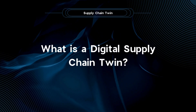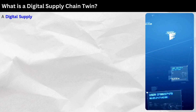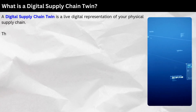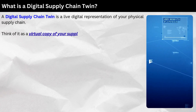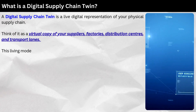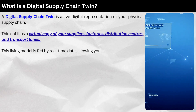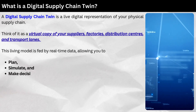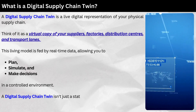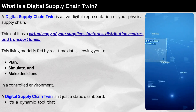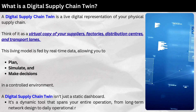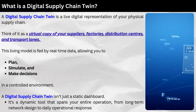What is a digital supply chain twin? Simply put, a digital supply chain twin is a live digital representation of your physical supply chain. Think of it as a virtual copy of your suppliers, factories, distribution centers, and transport lanes. This living model is fed by real-time data, allowing you to plan, simulate, and make decisions in a controlled environment. It's a dynamic tool that spans your entire operation from long-term network design to daily operational response.